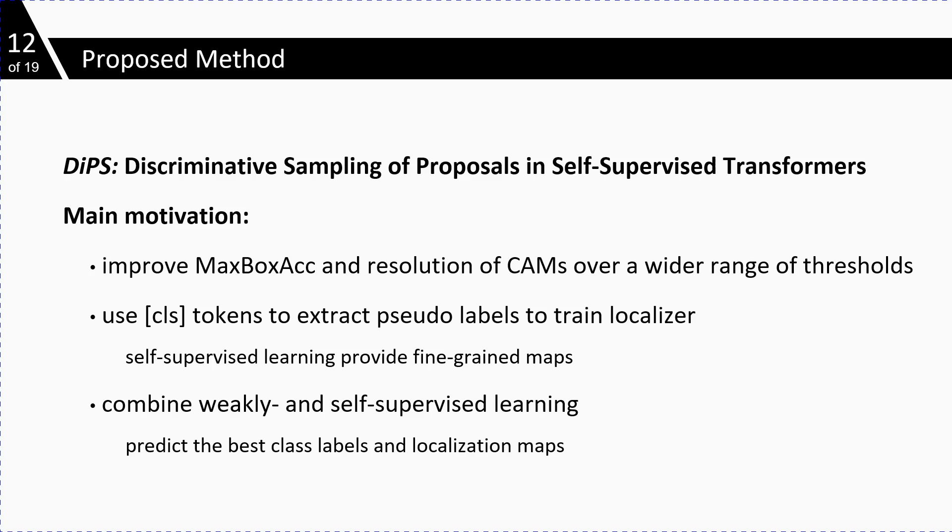For this purpose, we use class tokens extracted from self-supervised transformers to build pseudo-labels that help us to train our localizers. In this way, we can combine weakly and self-supervised learning to improve the robustness of the localization maps.